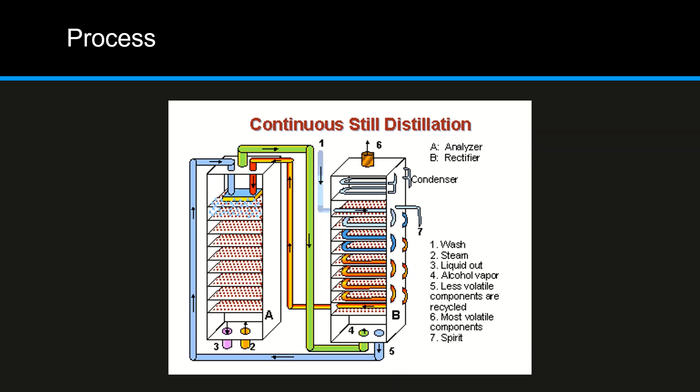There are also different pipes — pipe number five is where the less volatile components are recycled. These are taken out and fed back into the analyzer so that we can get more alcohol-rich vapors. Because this is a continuous process, it is called continuous still distillation. This process is generally used for gin, vodka, and most white spirits. Because it is continuous, it provides bigger batches than the pot still.